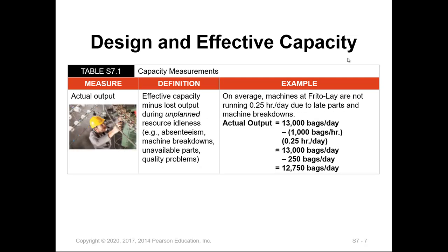There are other factors that affect the machines, such as breakdowns and late part arrivals, which account for another 15 minutes per day. Subtracting that — 0.25 hours multiplied by 1,000 — gives us 250 bags lost. We lose another 250 bags, bringing the total to 12,750. So the actual output is even less than the effective output we expected.